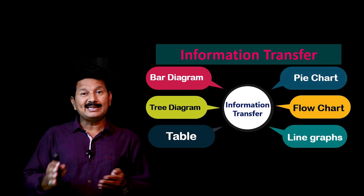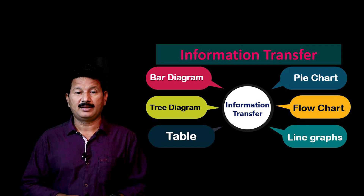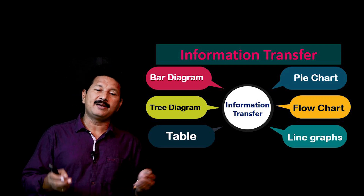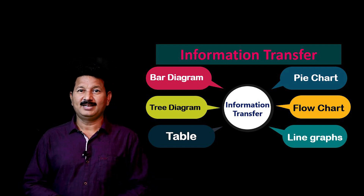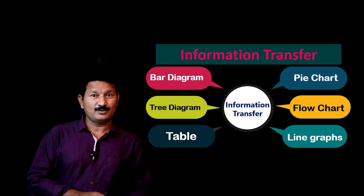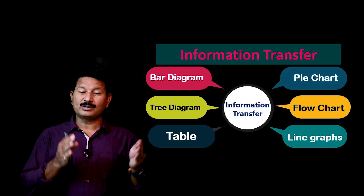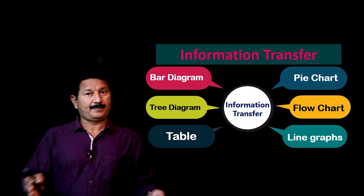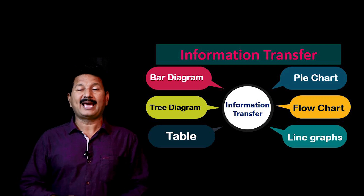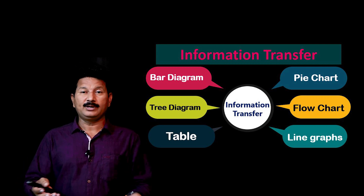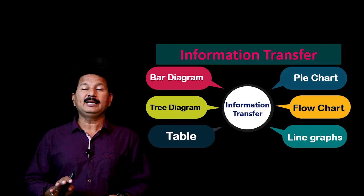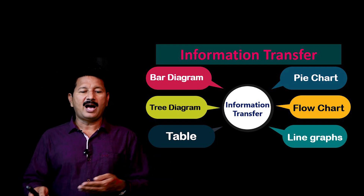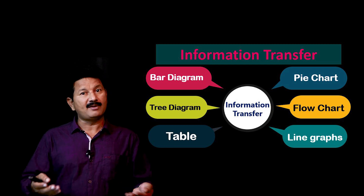Basically, information transfer can be in different ways. First of all, especially in our exams, we can find bar diagrams or pie charts, then tree diagrams, flow charts, tables, and line graphs. These are the six major varieties of information transfer. In exams we may get either a bar diagram or pie chart. Occasionally we get tree diagrams and flow charts.